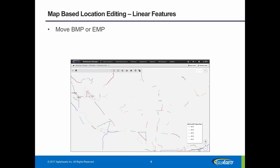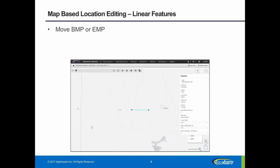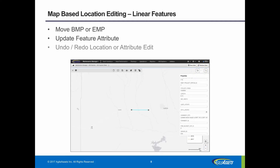Similar to point features, here you've got a map showing the work plan for pavement sections. You can move the beginning or the end mile point for a selected linear feature. When you select a section, the map zooms in such that both vertices are viewable on the map. You can select the beginning mile point and drag it to the new location where it ought to be, as well as select the end mile point to the new location. Clicking away from this will commit the edit. You can also edit the attribute of the linear feature, and just like point features, you can undo and redo either the location edit or the attribute edit.